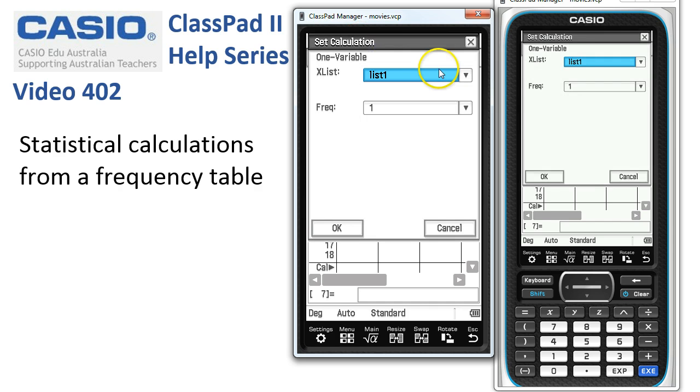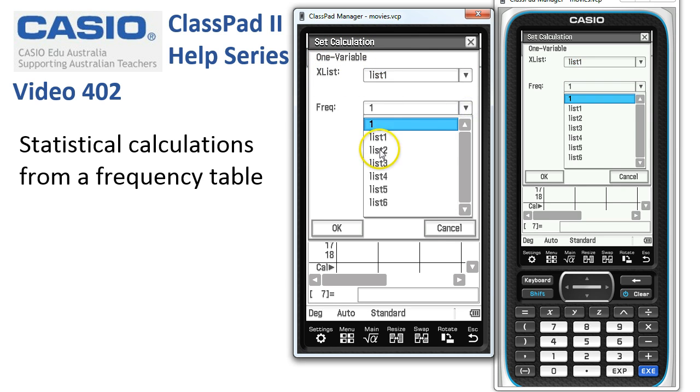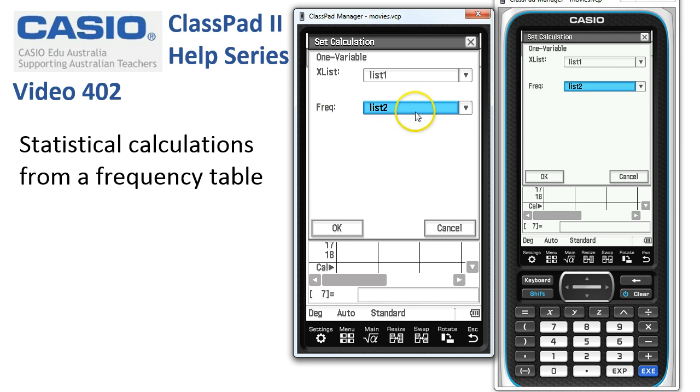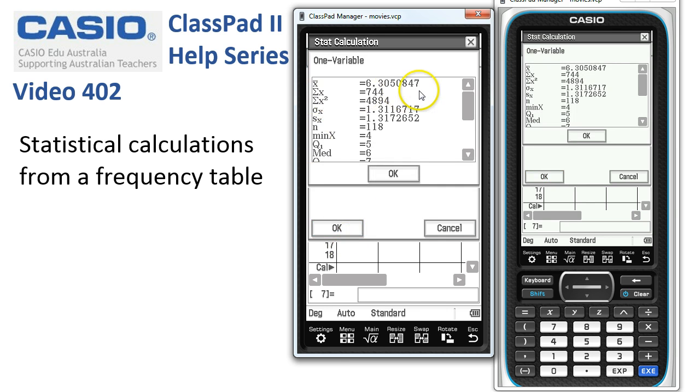And set up our calculation window. Now the variables are in list one, but the frequencies are in list two this time. So we'll select the frequencies. When we're done, we tap Okay, and here are summary statistics.